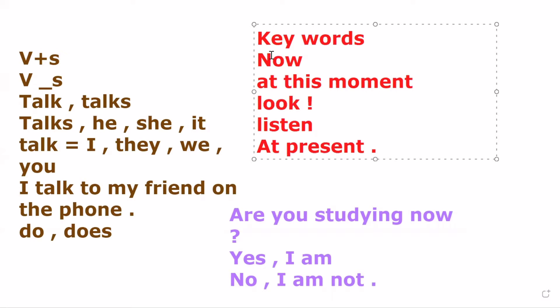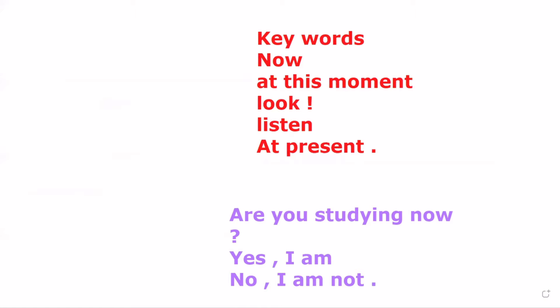This is the present continuous. One of the uses of the present continuous is something that is going on while talking — for example: 'I'm eating apples now.'